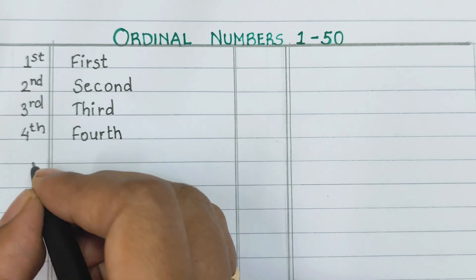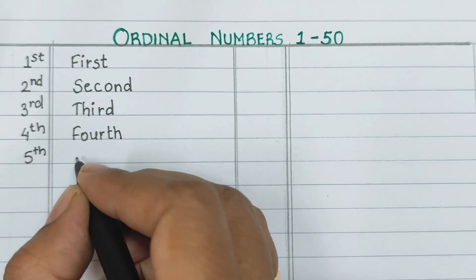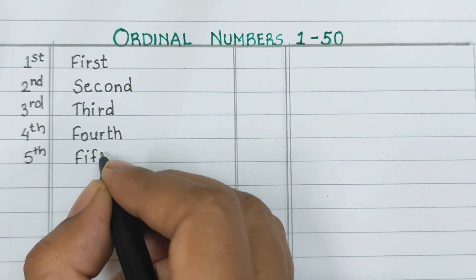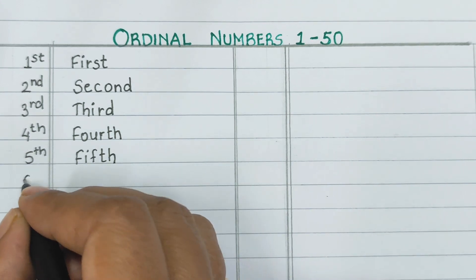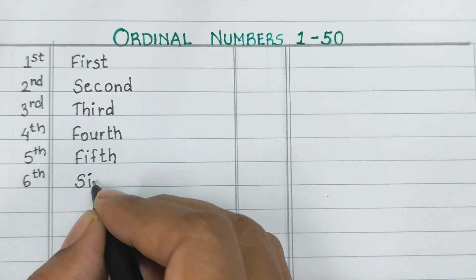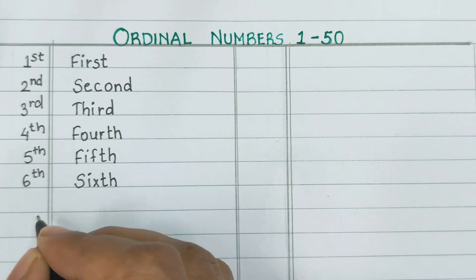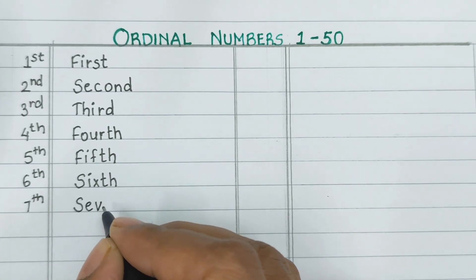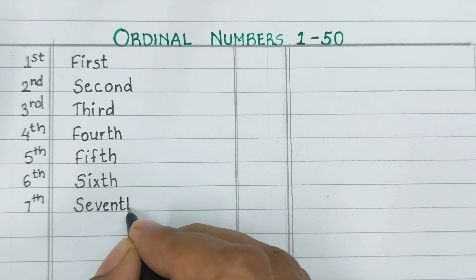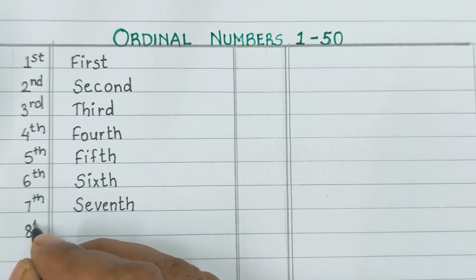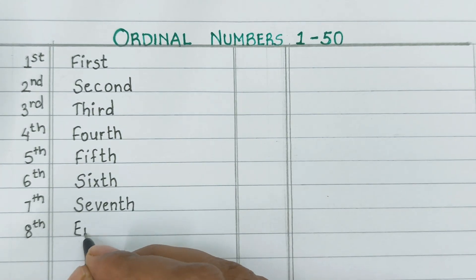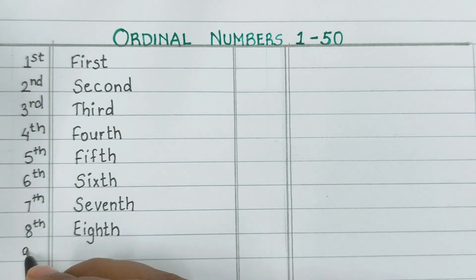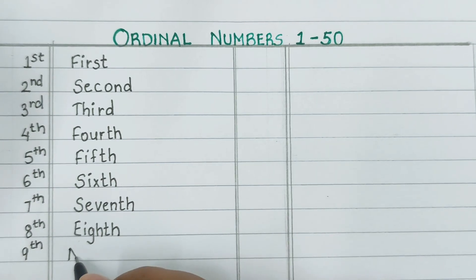Third: T-H-I-R-D. Fourth: F-O-U-R-T-H. Fifth: F-I-F-T-H. Sixth: S-I-X-T-H. Seventh: S-E-V-E-N-T-H. Eighth: E-I-G-H-T-H. Ninth: N-I-N-T-H.